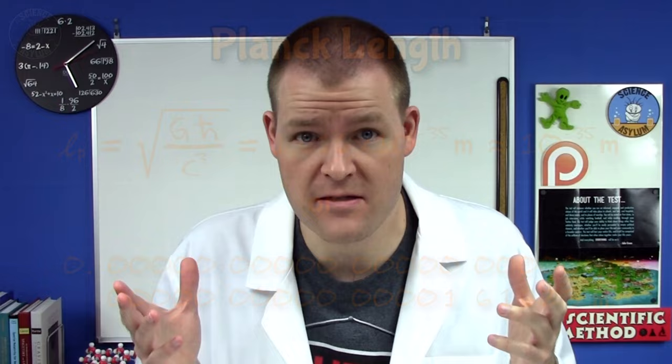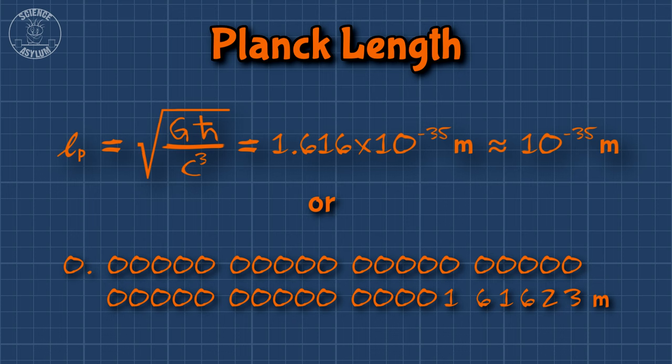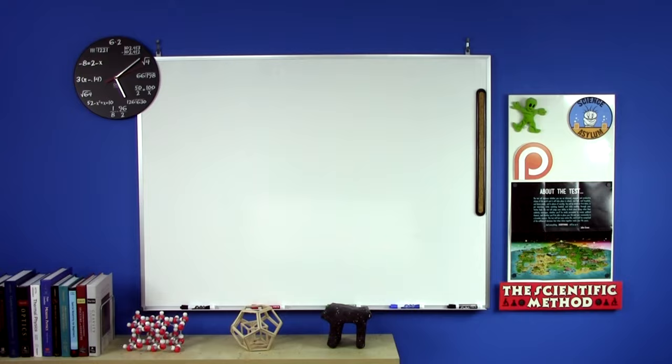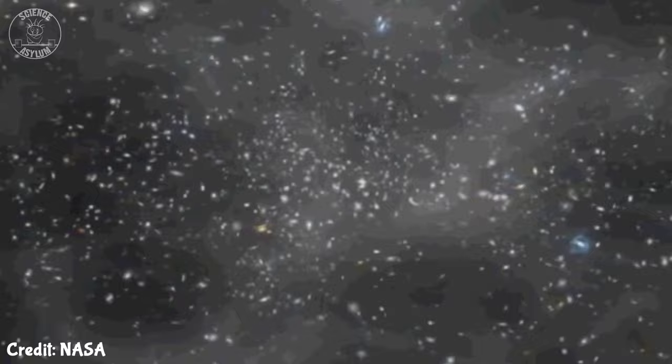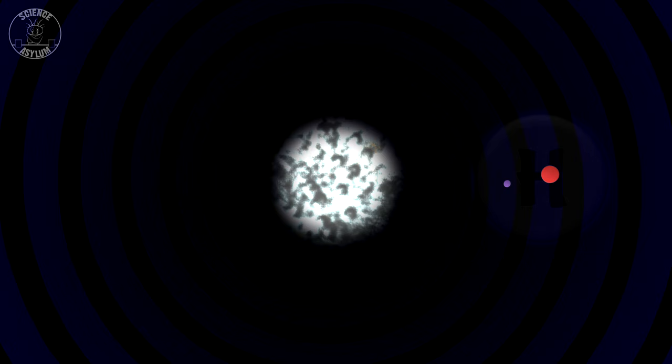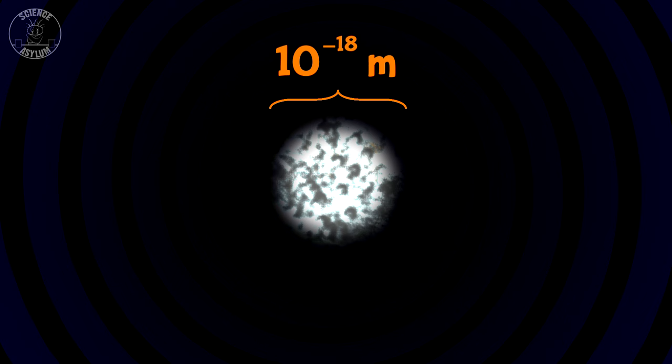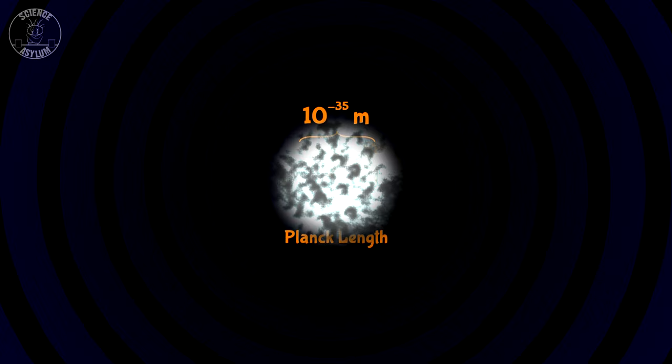Planck length is about 10 to the negative 35th meters. To understand how small this is, we need to turn back the clock a little. Playing the expanding universe in reverse, we can look way back in time. At one point the universe was the size of a basketball, then a human egg cell, then an atom, then a proton. At 10 to the negative 18 meters, we reach the smallest distance we've ever measured. Planck length is 17 more decimal places beyond that — it's insane!